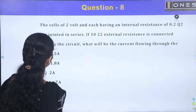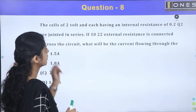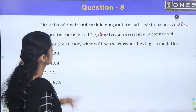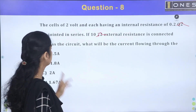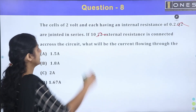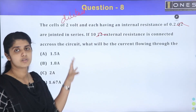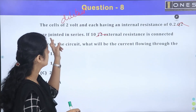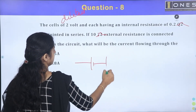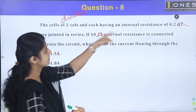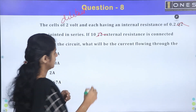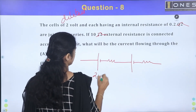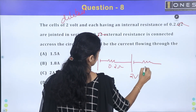The next question: cells of 2 volts having an internal resistance of 0.2 ohms are joined in series. If a 10 ohm external resistance is connected across the circuit, what will be the current flowing through it? We start with 1 cell — 2 volts with inner resistance of 0.2 ohms.